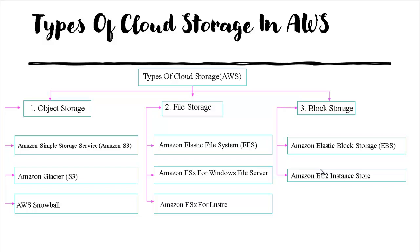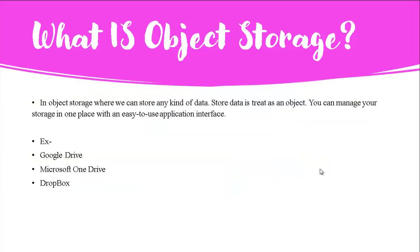Now we will know each service briefly. What is object storage? In object storage, we can store any kind of data — every stored data is treated as an object. You can manage your storage in one place with an easy-to-use application interface and access that data anywhere in the world. Examples of object storage are Google Drive, Microsoft OneDrive, and Dropbox. In AWS, Amazon S3 is the object-level storage example.